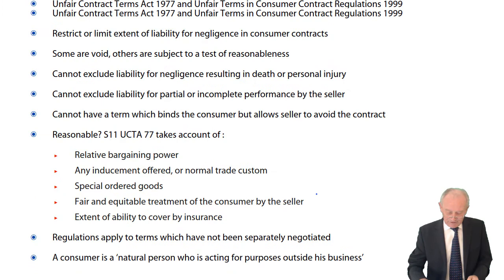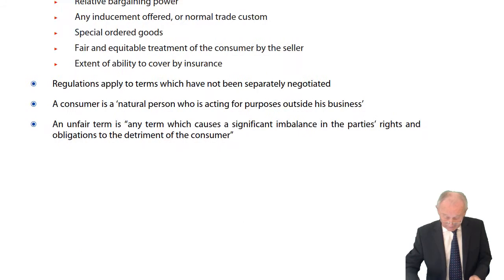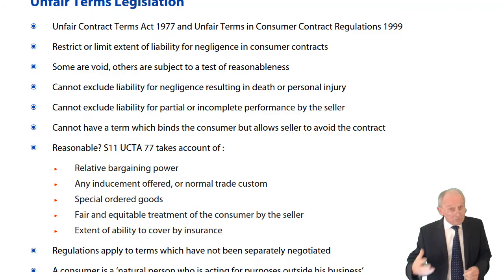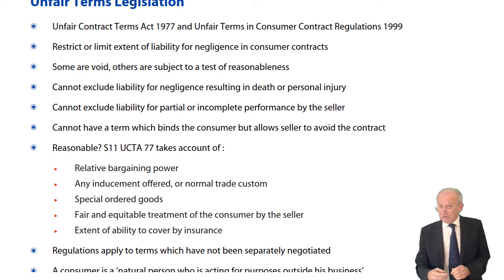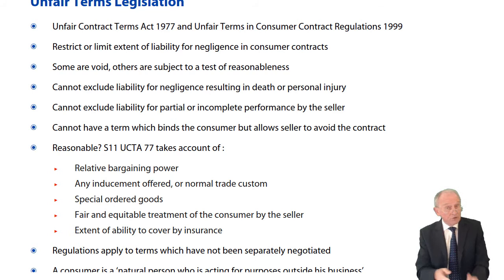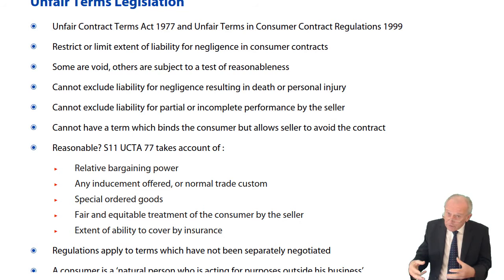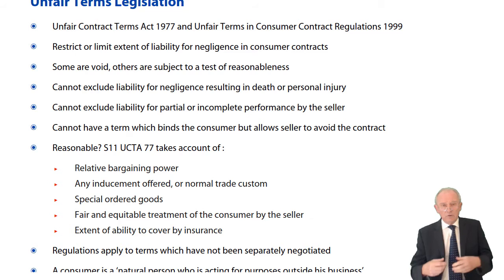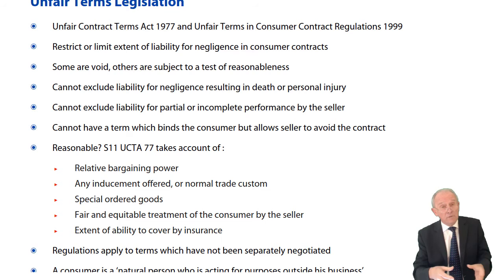Moving to unfair terms legislation — the Unfair Contract Terms Act 1977 and the Unfair Terms in Consumer Contract Regulations 1999. These restrict or limit the extent of liability for negligence in consumer contracts, where one of the parties is not acting in the course of business. When you buy food at a supermarket or a car, you're a consumer; when a motor dealer buys from a manufacturer, they're not. Some terms are void, others are subject to the test of reasonableness.